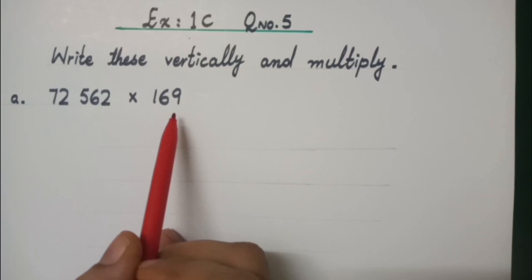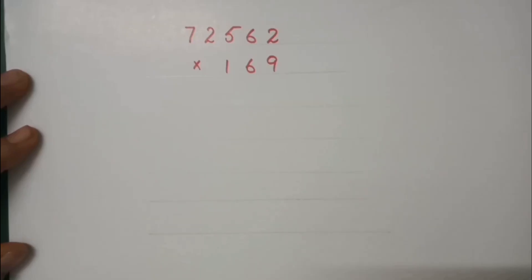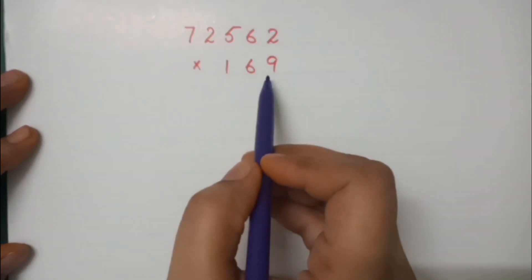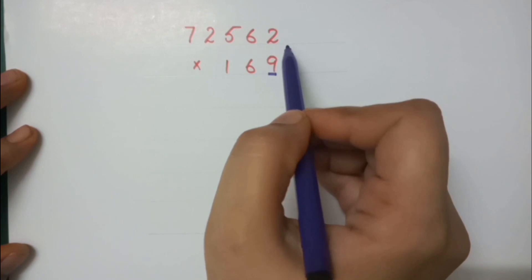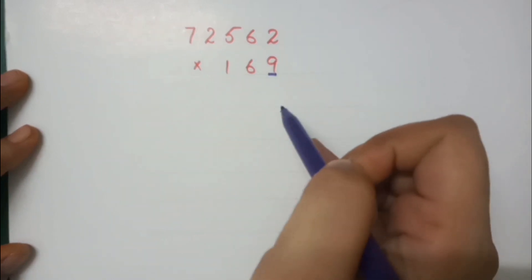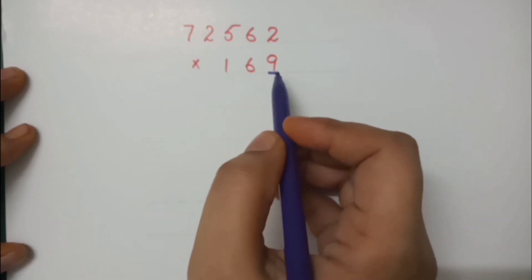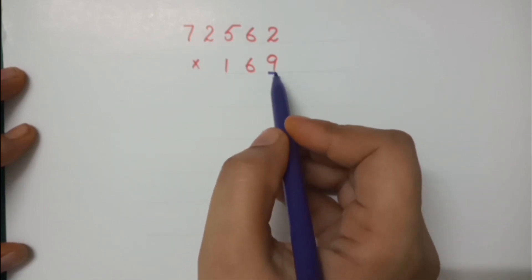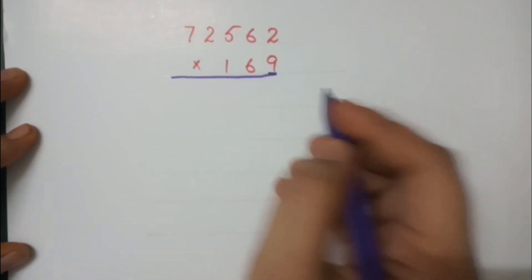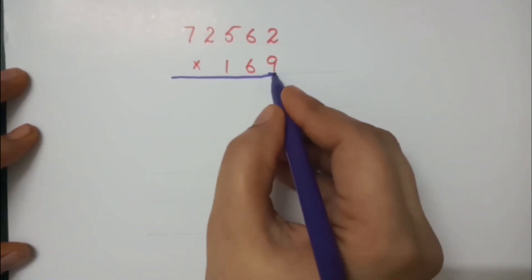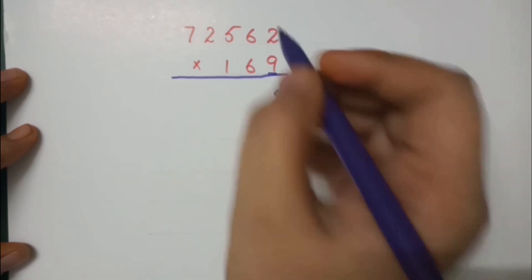First of all, you have to write these vertically. We first multiply 9 with the whole value. How do we multiply this? We have to first read the table of 9. 9 twos are 18 — write 8 here and 1 would be carry.